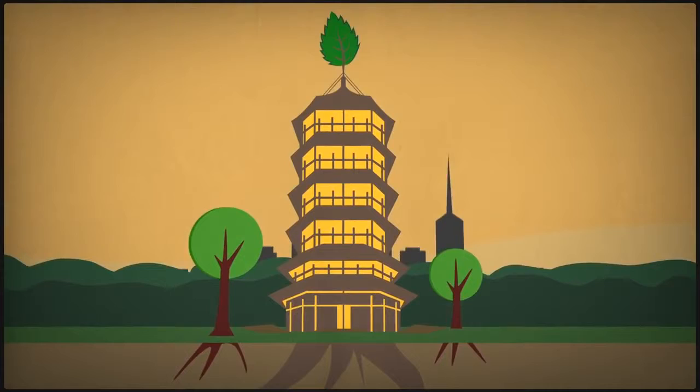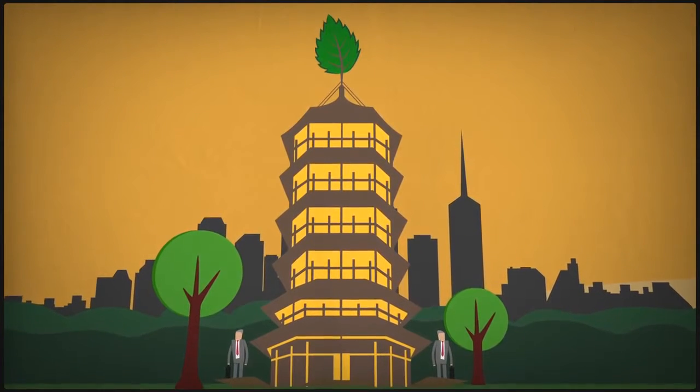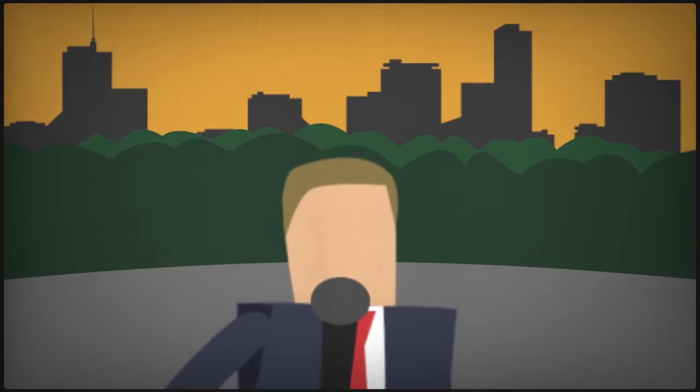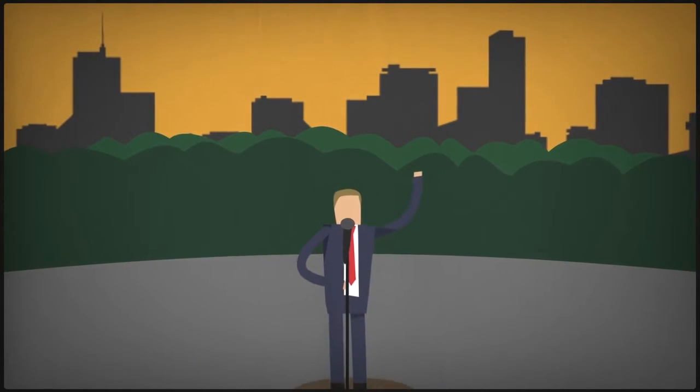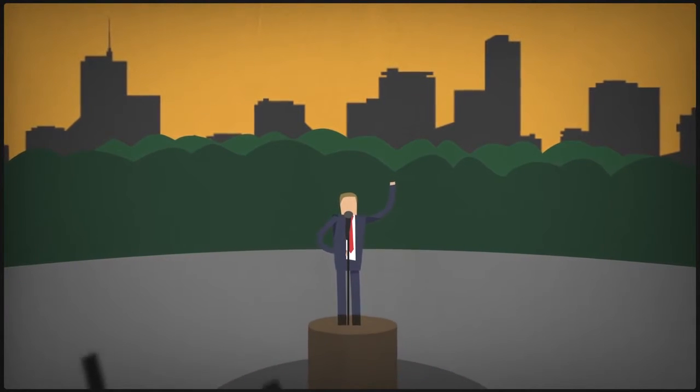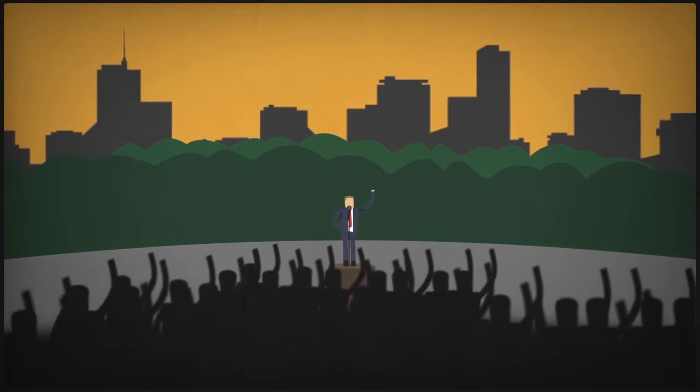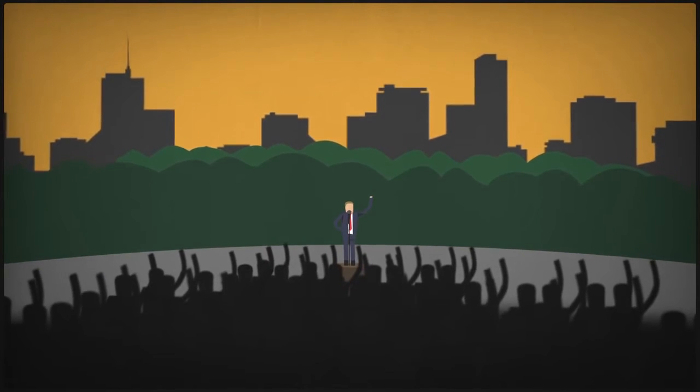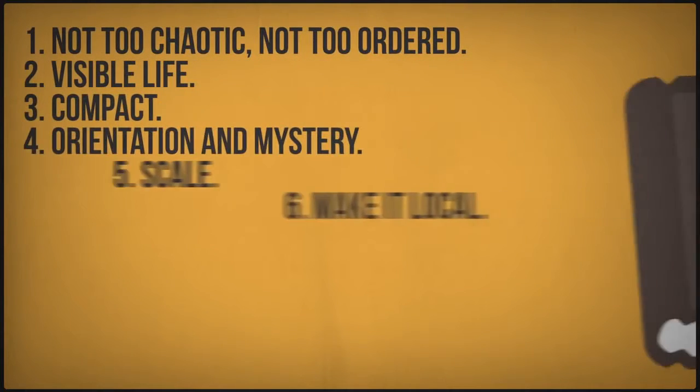We can create more beautiful cities, but we have to confront opportunistic developers and our own intellectual confusions. Governments can only create beauty if they have enough public backing. Political will is ultimately about what all of us, the electorate, are asking for. That's why we made this film and hope to awaken you to your power as citizens to help legislate for beautiful cities in the future. These are the six rules. Now it's time to fight to put them in action.